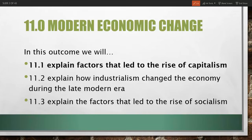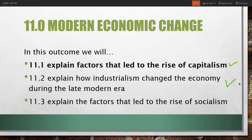In this outcome, we'll look at some major economic changes that occurred in the modern era. In 11.1, we'll look at factors that led to the rise of capitalism. In 11.2, we'll explain how industrialism changed the economy during the late modern era. And in 11.3, we'll explain the factors that led to the rise of socialism.